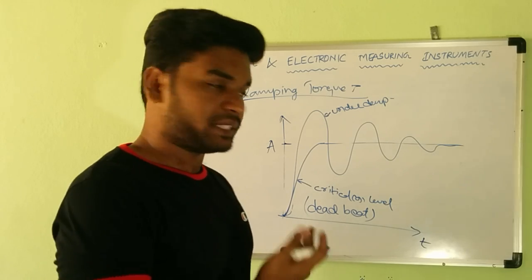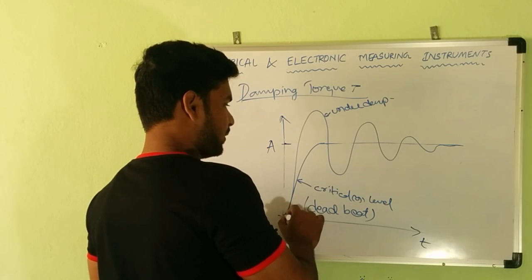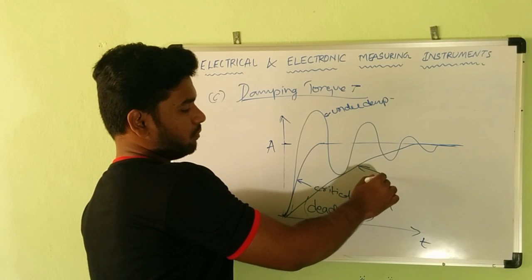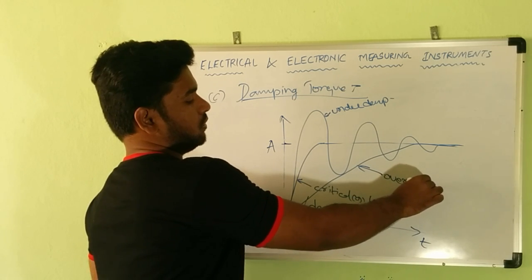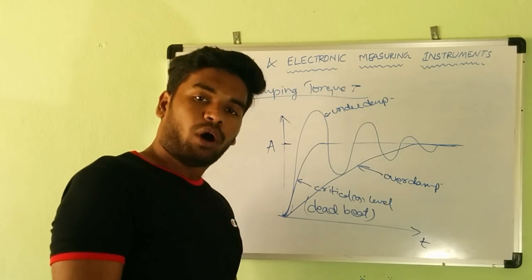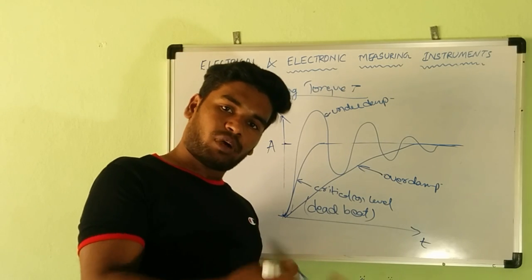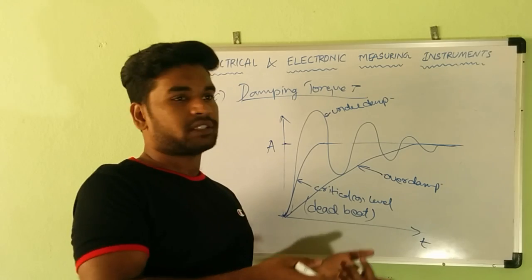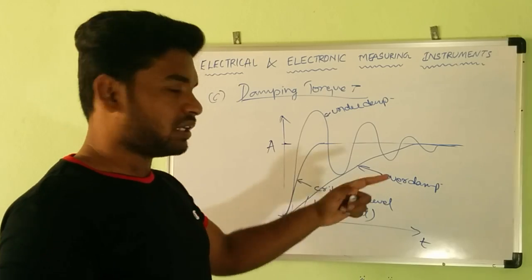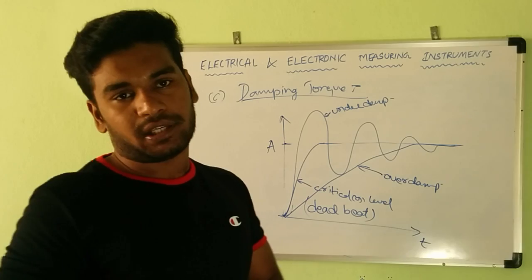If I get overexcited and increase the damping even more, this is called over damping. When the system is over damped, it behaves very slowly or lethargically — the system response is very slow. By the time you want to remove your meter, it still hasn't reached steady state, which is not useful. These are the different responses of measuring instruments based on the level of damping.